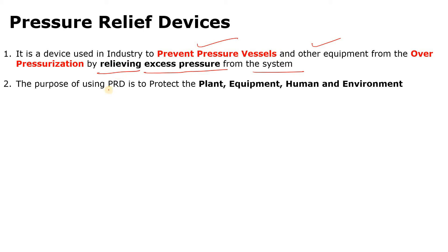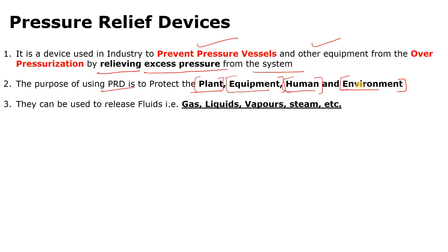The main purpose of using pressure relief devices is to protect our plant, equipment, humans, and the environment. If we are dealing with pressure and there are no pressure relief devices and overpressurization occurs, it may burst or blast, causing damage to the plant and equipment. There may also be accidents involving humans, and if there are toxic gases, it may cause harmful effects on the environment as well.